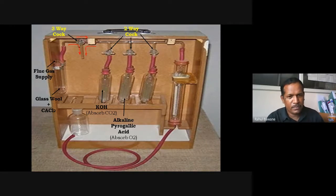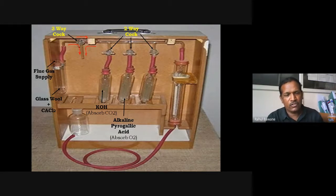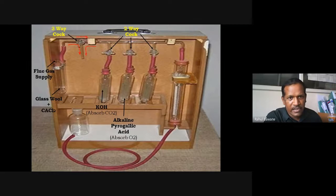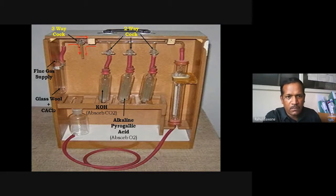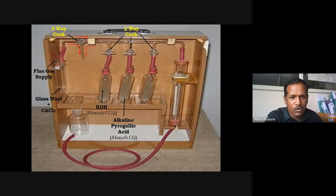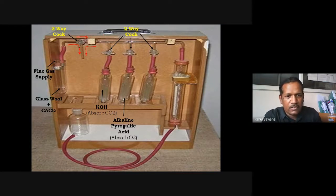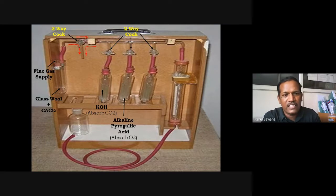The second bulb contains alkaline pyrogallic acid, which absorbs O₂. As asked in practical exams: it absorbs any O₂ — meaning not only free O₂ but also O₂ derived from CO₂. So if we directly send exhaust gas to the second bulb without first removing CO₂, the O₂ from CO₂ would also get absorbed, and we would not get a correct reading for CO₂ content.